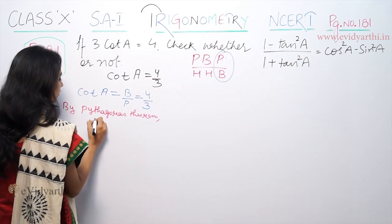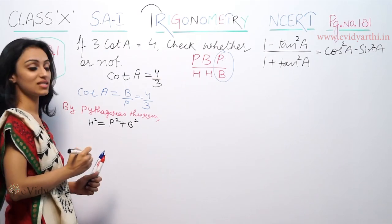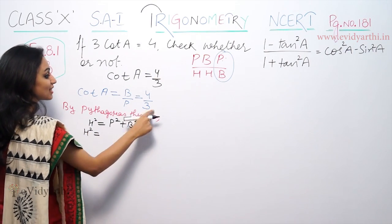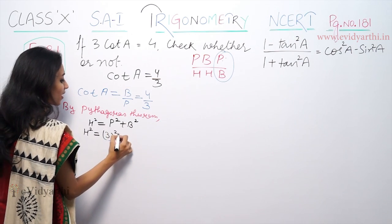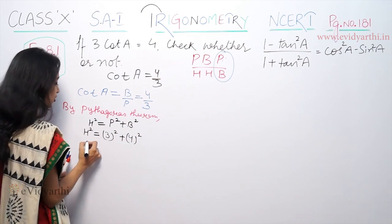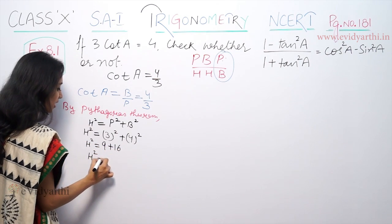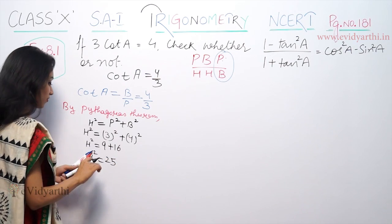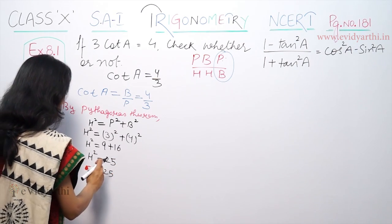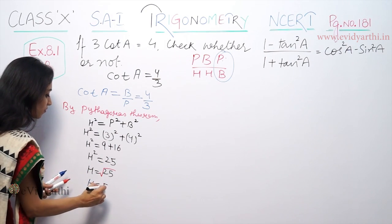By Pythagoras theorem, H squared equals P squared plus B squared. H squared equals 3 squared plus 4 squared. H squared equals 9 plus 16, which equals 25. So H equals 5.